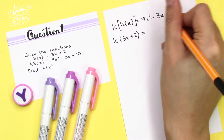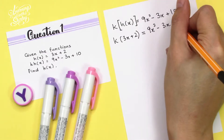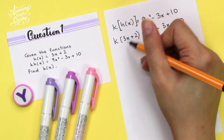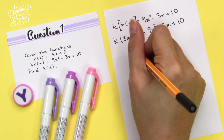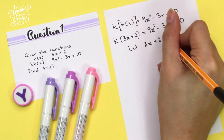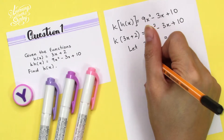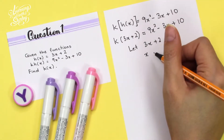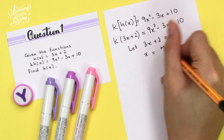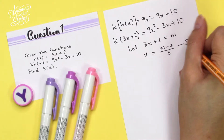We bring this down: 9x² - 3x + 10. Since there is a polynomial inside the bracket, we have to let 3x + 2 = m. Then we make x the subject, so x = (m - 2) / 3. I'll take this as equation 1.